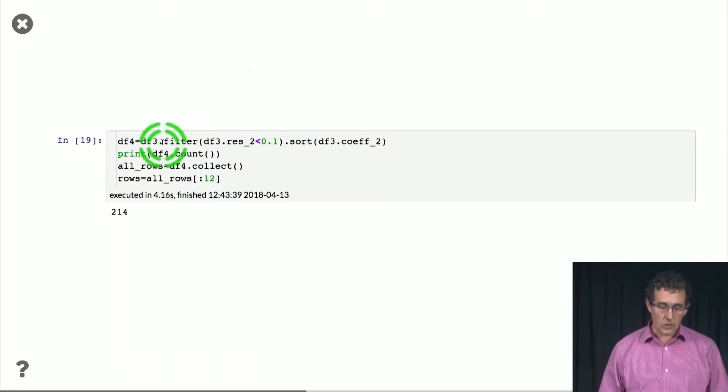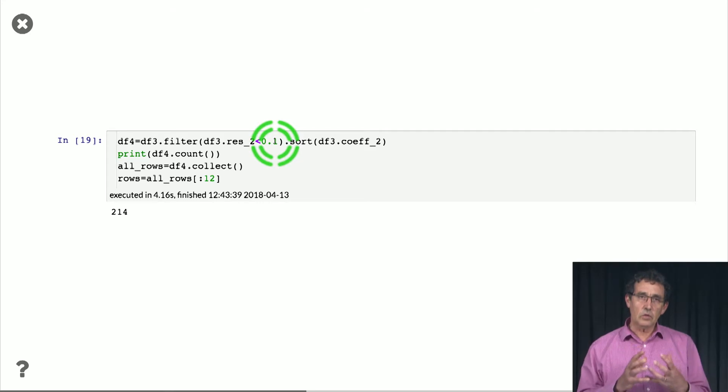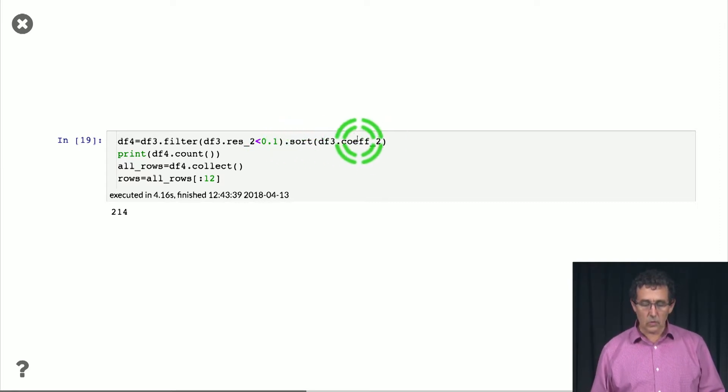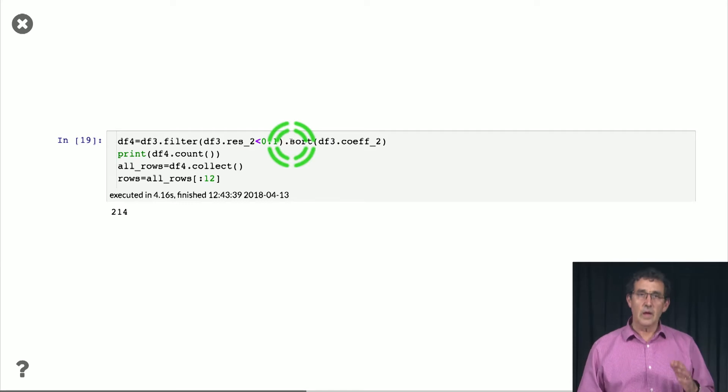So what we're going to do is generate a new data frame in which we're basically going to make sure that the residual after 2 is smaller than 0.1, so that we have a good approximation after we take the first two components. And then we're going to sort according to the second coefficient. So we want the second coefficient to go from the minimum to the maximum, and we also want the approximation after the second coefficient to be good. So this is not going to get all of the vectors, that's going to get just 214 of the vectors, but that is enough just to see the demonstration.